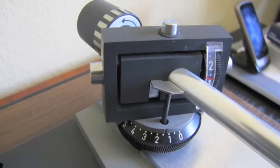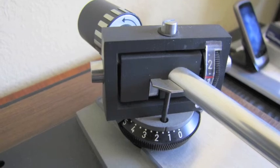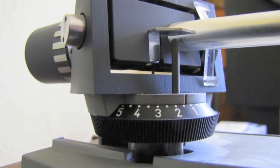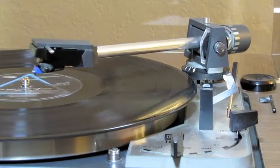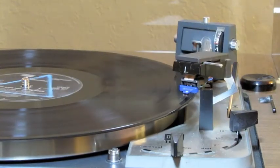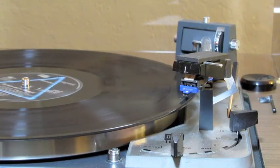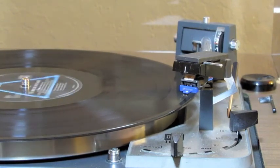Reassemble the turntable and set the stylus force with a gauge. Set the anti-skate according to the owner's manual.